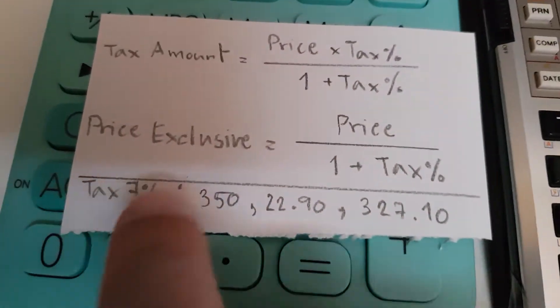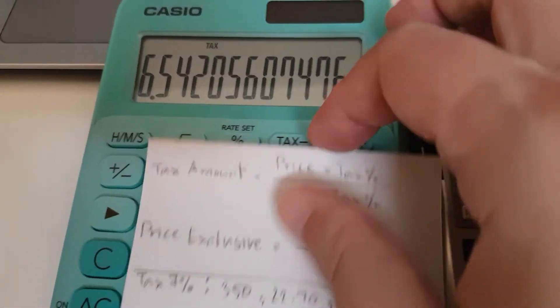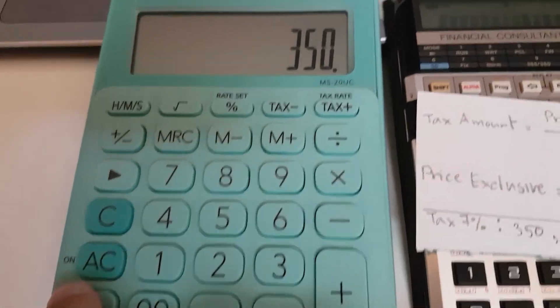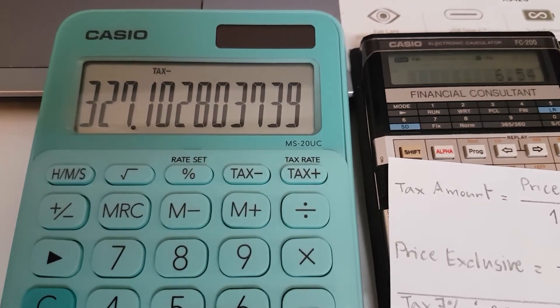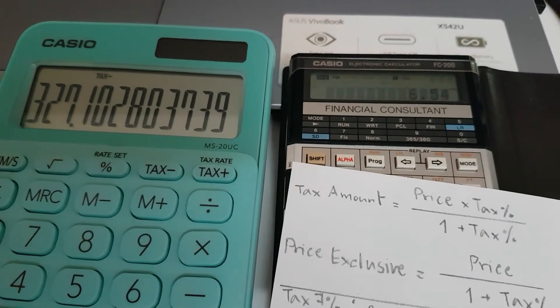To double check again on this example, I have 350. Tax minus, that should be 327 and 10 cents. 327 and 10 cents, same as that.